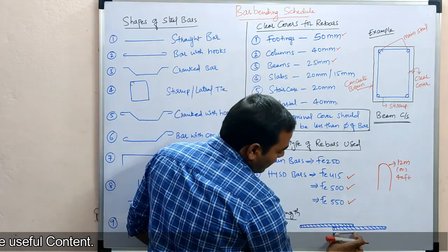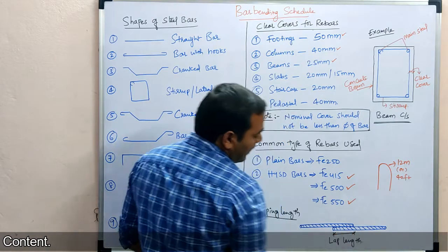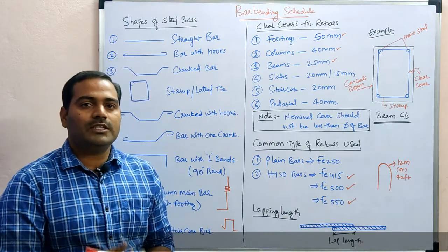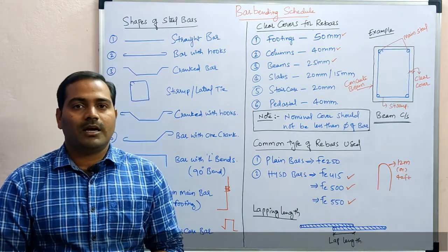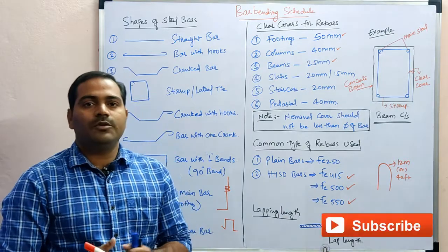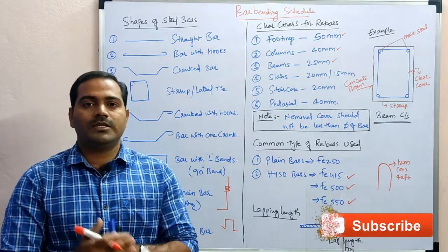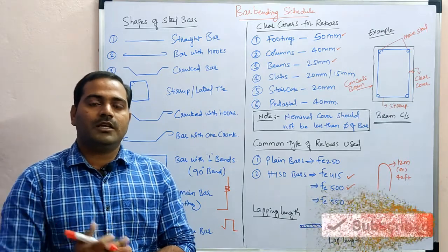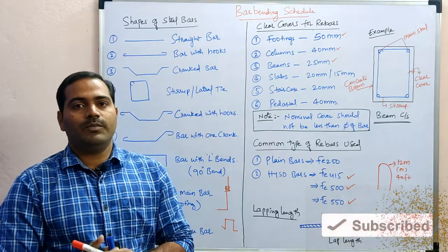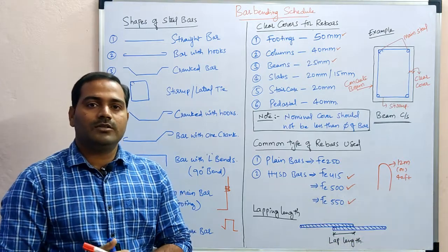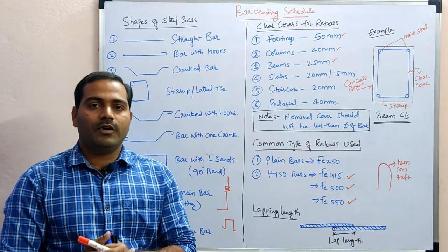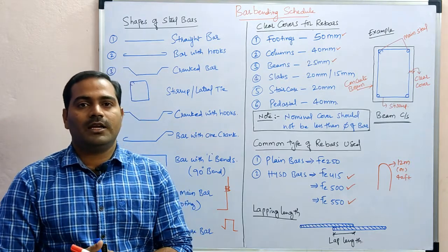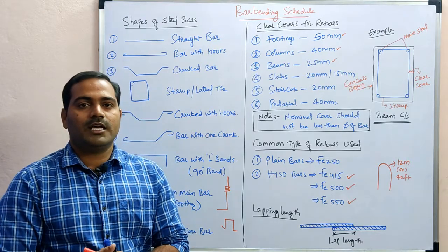You can see the lap here — this is one bar and this is another bar that we have lapped. For lapping there are different conditions as per IS codes, which we will see in coming videos. Stay tuned and don't miss the videos, as each one builds on the previous. If you are watching this channel for the first time, do subscribe and hit the like button. Thanks for watching.